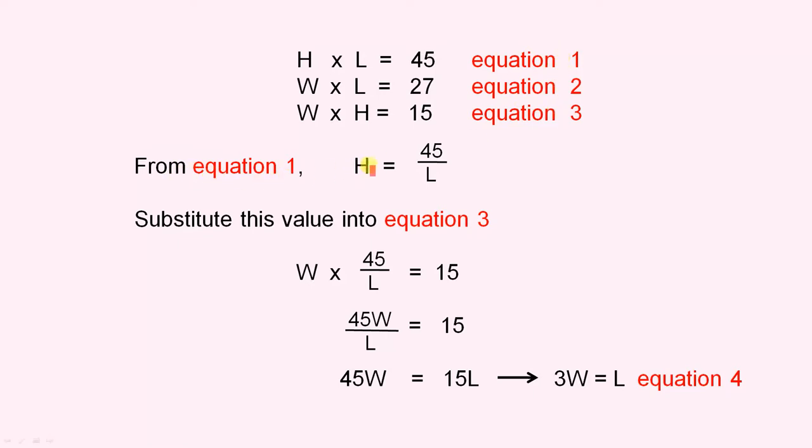So from equation 1, we have H equals 45 over L. So for here, we just divide both sides by L. So that gives us H equals 45 over L.